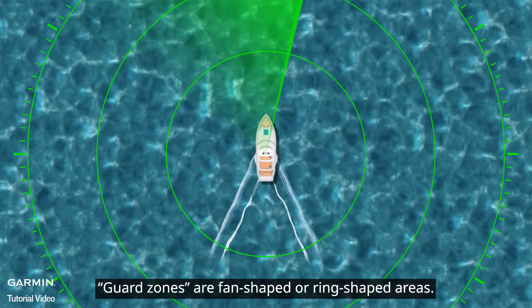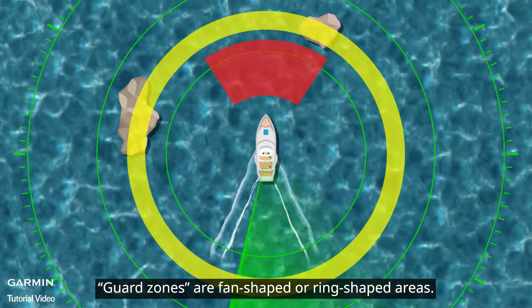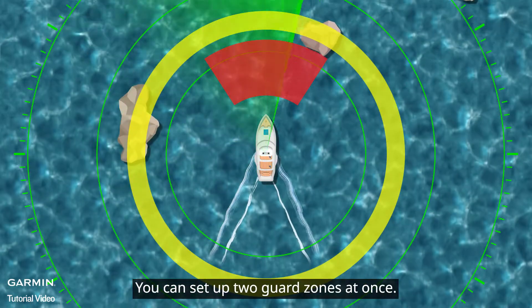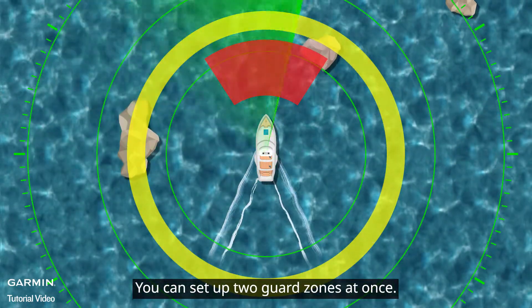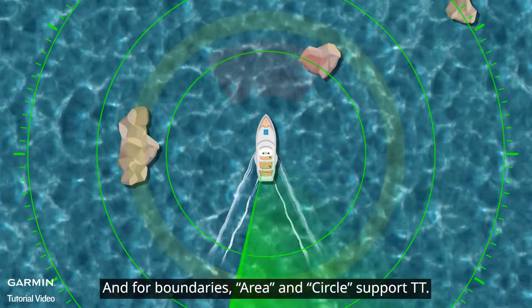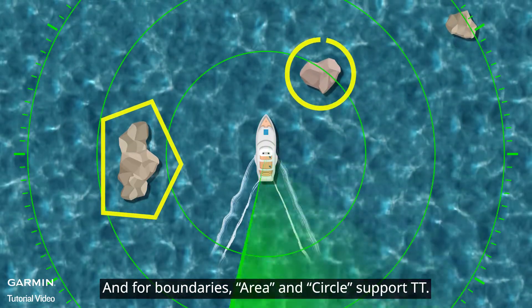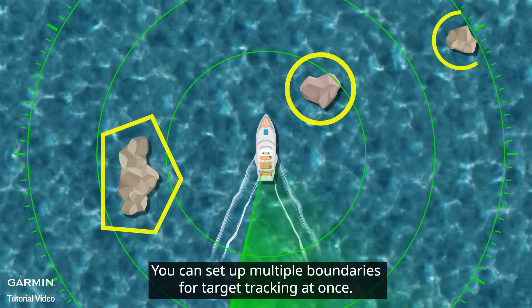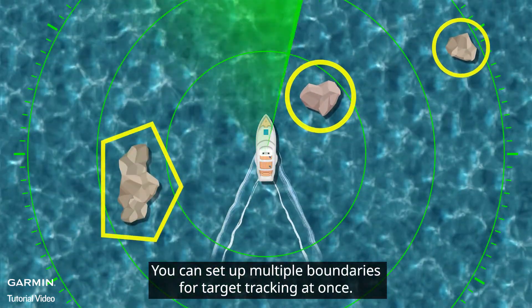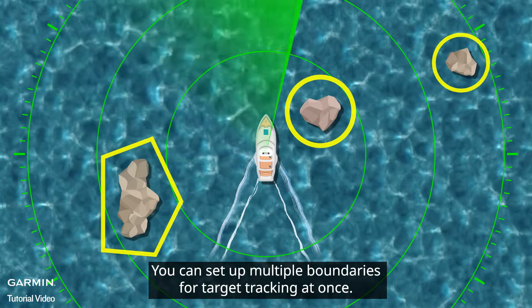Guard zones are fan-shaped or ring-shaped areas. You can set up two guard zones at once. For boundaries, area and circle support TT. You can set up multiple boundaries for target tracking at once.